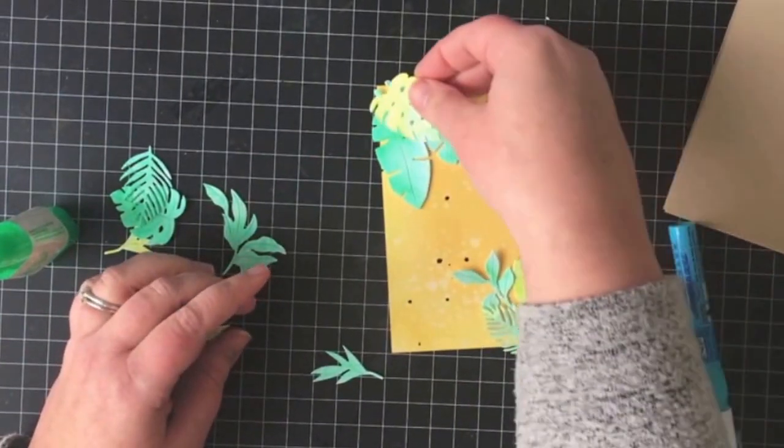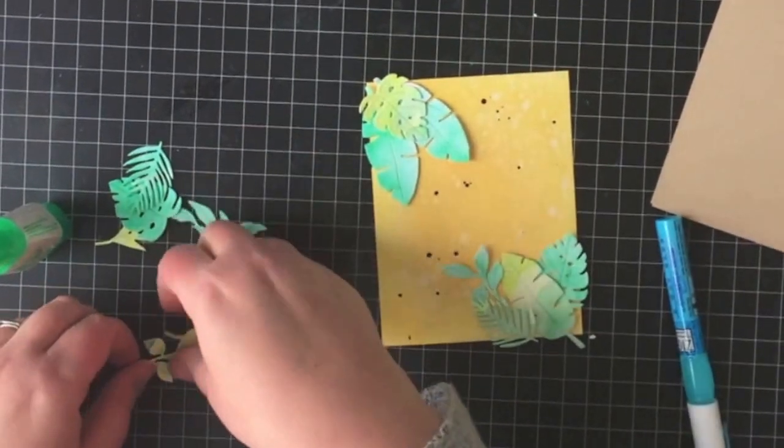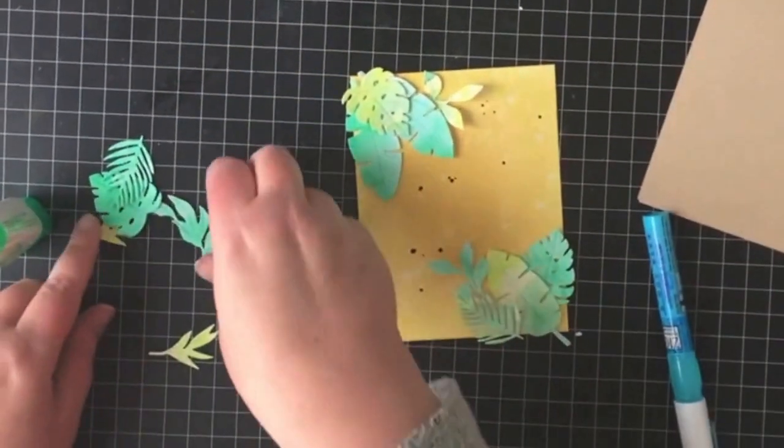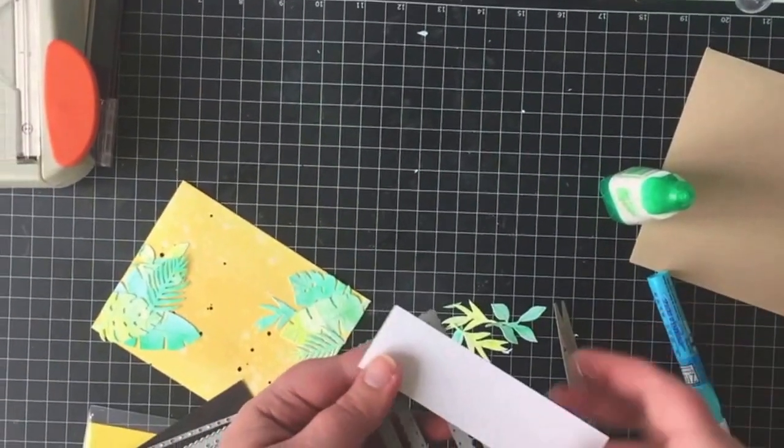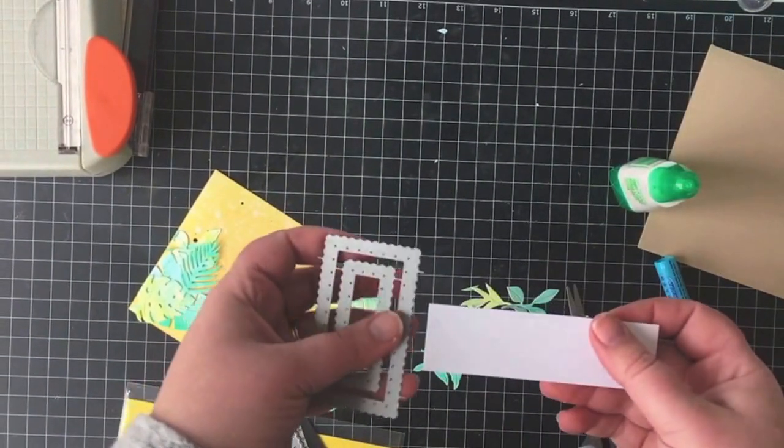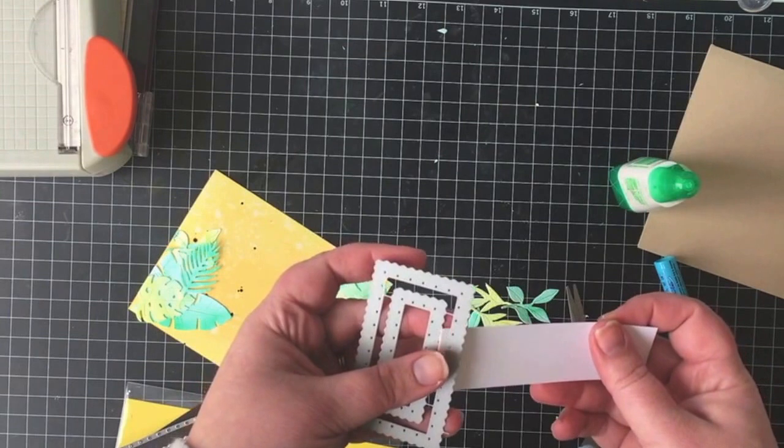Now I'm figuring out the placement for the leaves that I've die cut and you can see the beautiful variation that I was able to achieve using the watercolor paper.